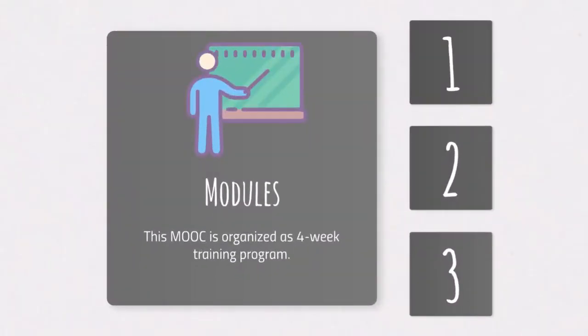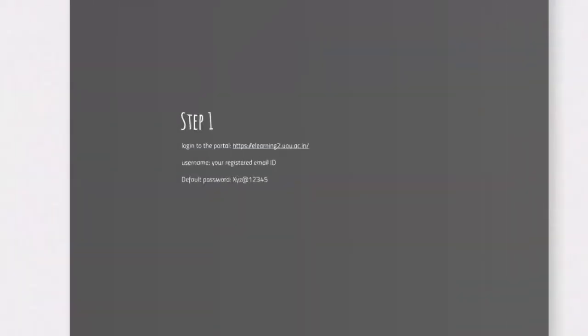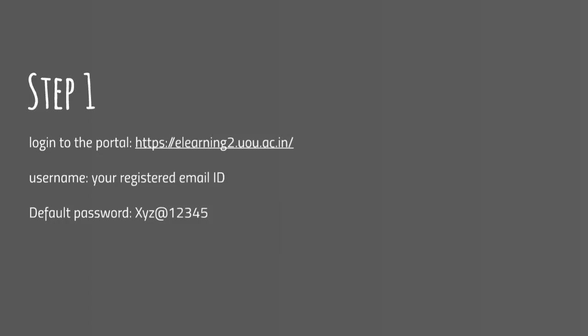Now some additional details about weekly modules. This MOOC is organized as a 4-week training program. You have to login to the portal elearning2.uou.ac.in. In case a bulk registration is done for you, your registered email ID is your username and the default password is capital X, small y, small z, at the rate 12345. This is the default password and you are advised to change it after your first login. In case you have done email-based self-registration, then you know your username and password.